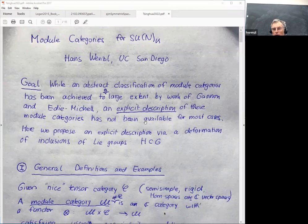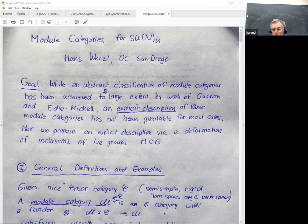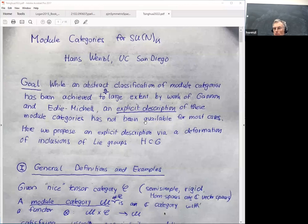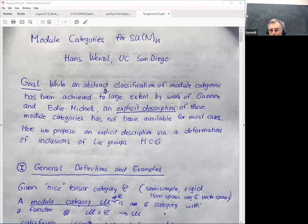An abstract classification of module categories has been achieved to a large extent by work of Terry Gannon, Eddie Mitchell, and others. This is given by something called modular invariants, which are essentially certain matrices with integer coefficients — so this is mostly just a combinatorial problem.